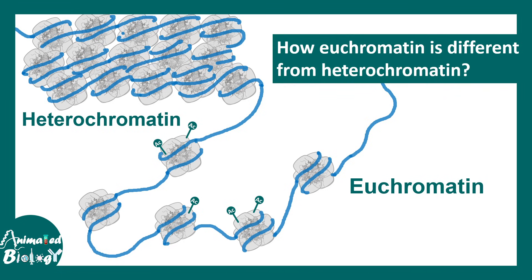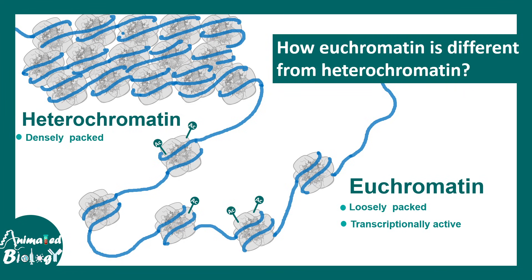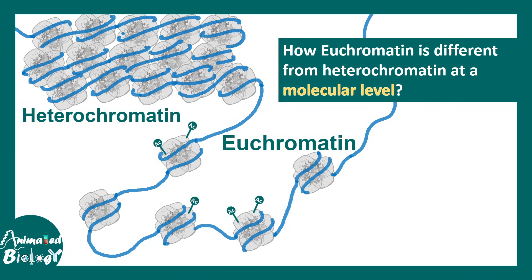Comparing heterochromatin versus euchromatin: in heterochromatin, the densely packed regions are less acetylated, whereas euchromatin is loosely packed and highly acetylated. Several histone modifications determine the status of the chromosome — euchromatin is transcriptionally active whereas heterochromatin is inactive.